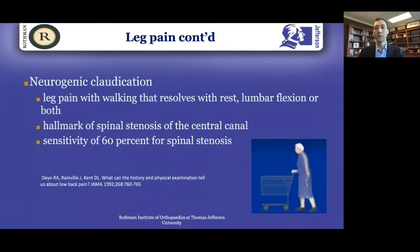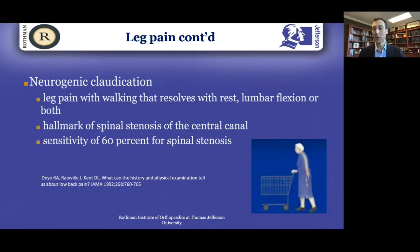Another type of leg pain we see frequently is bilateral leg pain — the kind where when you're walking, you feel cramping, heaviness, numbness, and tingling. It's usually worsened with walking and relieved by sitting down or leaning forward. That's referred to as neurogenic claudication, and it's the type of leg pain people with spinal stenosis present with. When you see people hunched over pushing shopping carts, that's what we call the shopping cart sign — the hallmark of spinal stenosis.